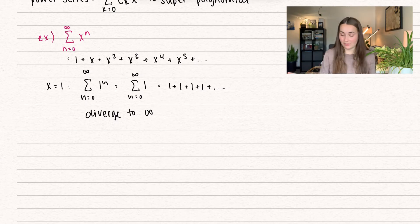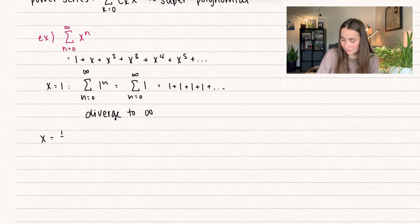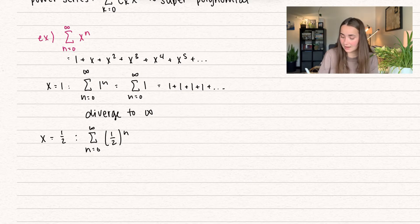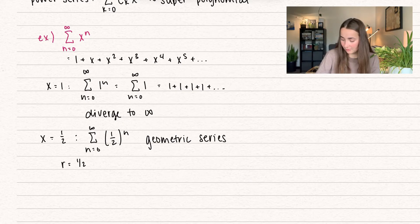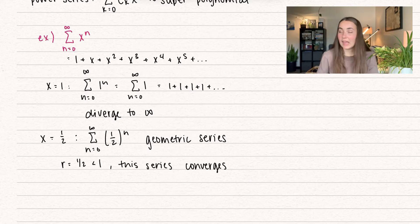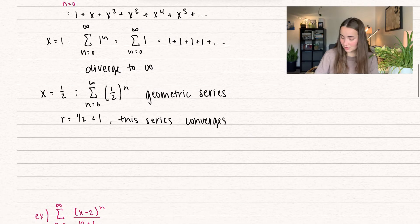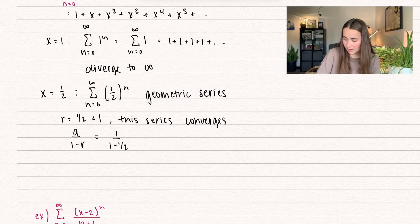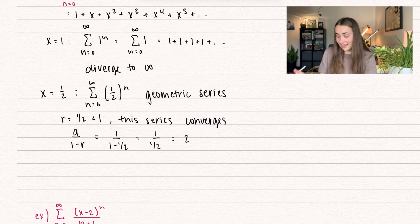If we want to find something that converges, maybe we have to think of a small number. Let's do x equals 1/2. Then we have the summation n equals 0 to infinity of 1/2 to the power of n. This is a geometric series with common ratio 1/2, which is less than 1, so this series converges. We can also tell what it converges to: a over 1 minus r. In our case, the first term is 1 over 1 minus 1/2, which is 1 divided by 1/2, which equals 2. So here we can plug in different x values and that tells us if the series converges or diverges.